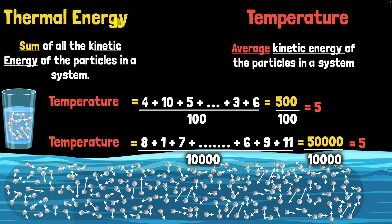Can you think about whether thermal energy and temperature are extrinsic or intrinsic quantities? Thermal energy depends on the amount of stuff — a little bit of stuff gives you a little bit of thermal energy, and a lot of stuff gives you a lot of thermal energy. So since it depends on the amount of stuff, it's an extrinsic or extensive property. But temperature does not depend on the amount of stuff — whether you take a little or a lot, the temperature is the same — because you're averaging it out. So temperature is an intrinsic or intensive property.